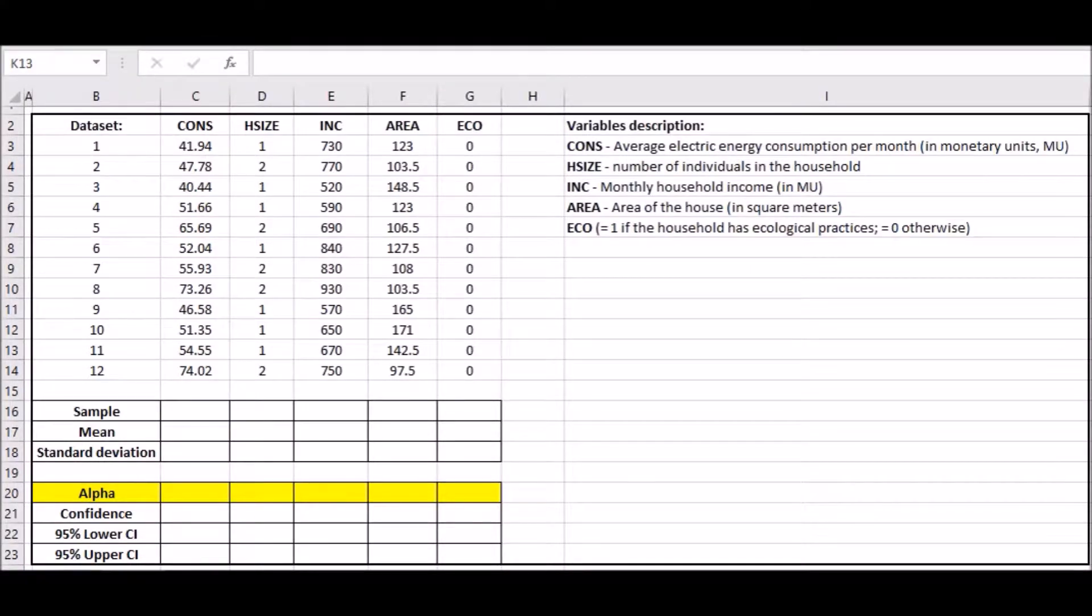Hey guys, welcome back to another video. Here we'll be trying to calculate the upper and lower confidence intervals from any given dataset. I've compiled this dataset from one of my research projects, which is an assignment. I've decided to collect the first 12 pieces of data. I didn't want to use any more just to keep this video brief and simple.